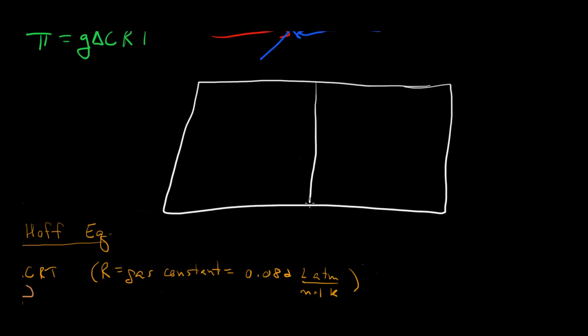Again we have a cell with a semi-permeable membrane, and instead we have urea, a naturally occurring substance in your body, and we also have water on both sides.